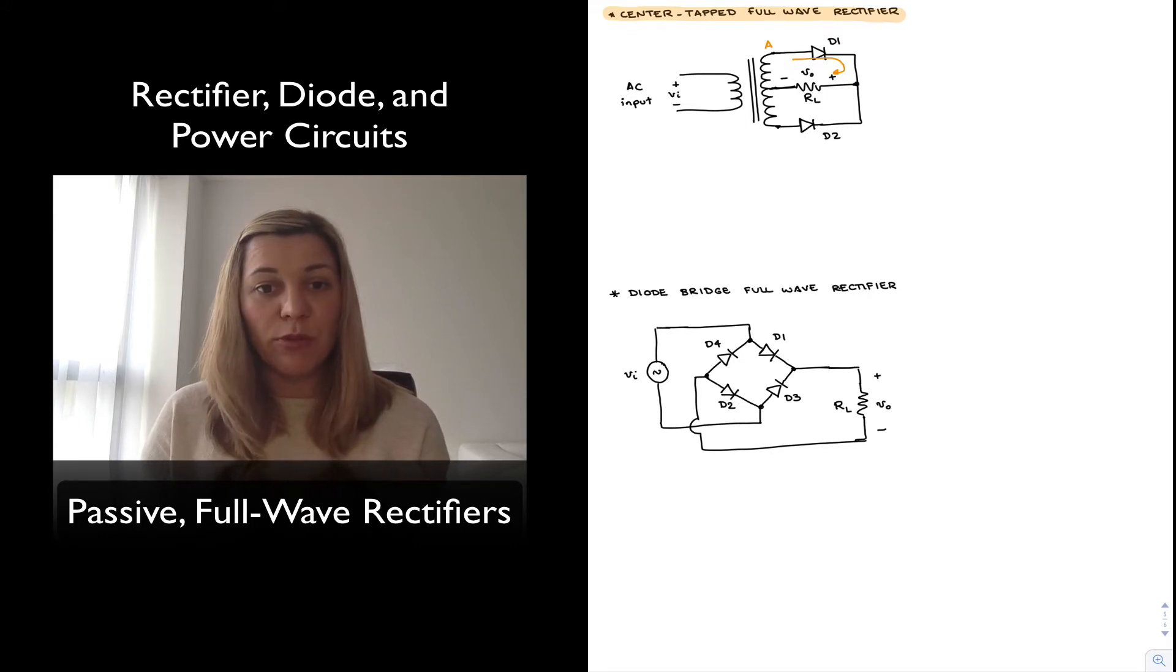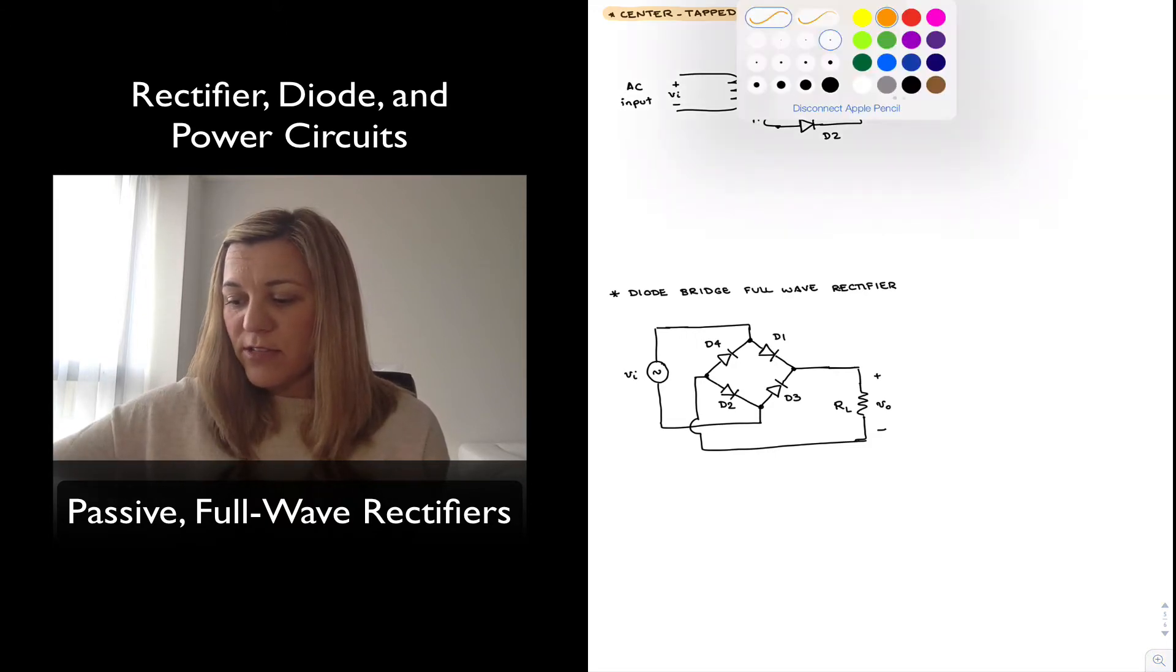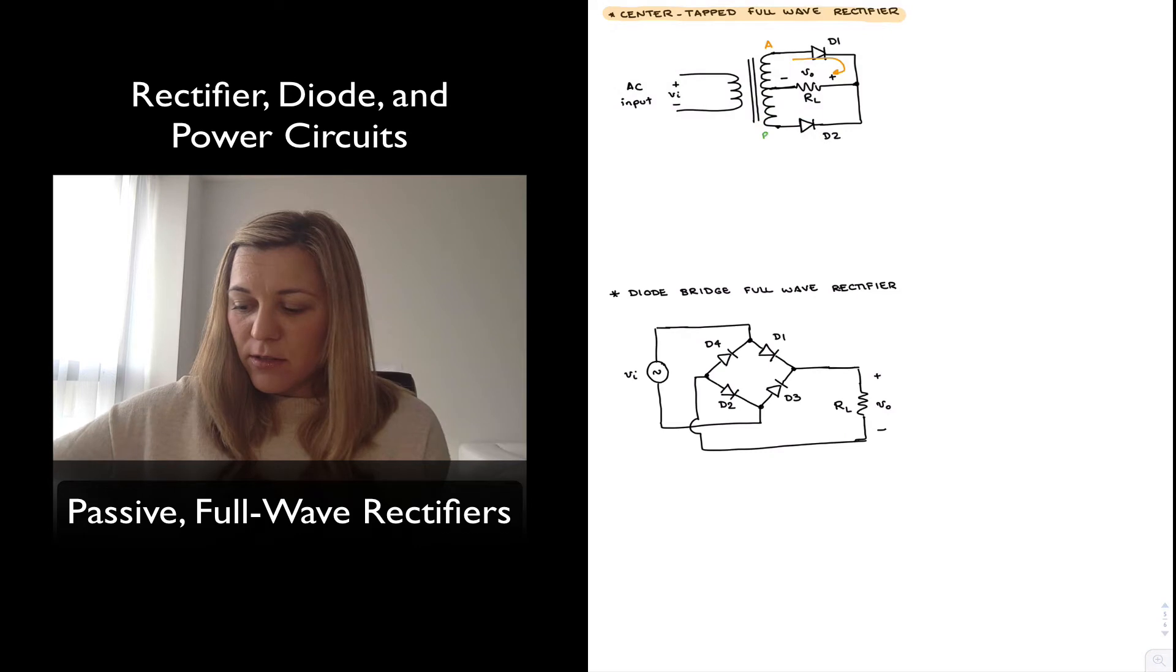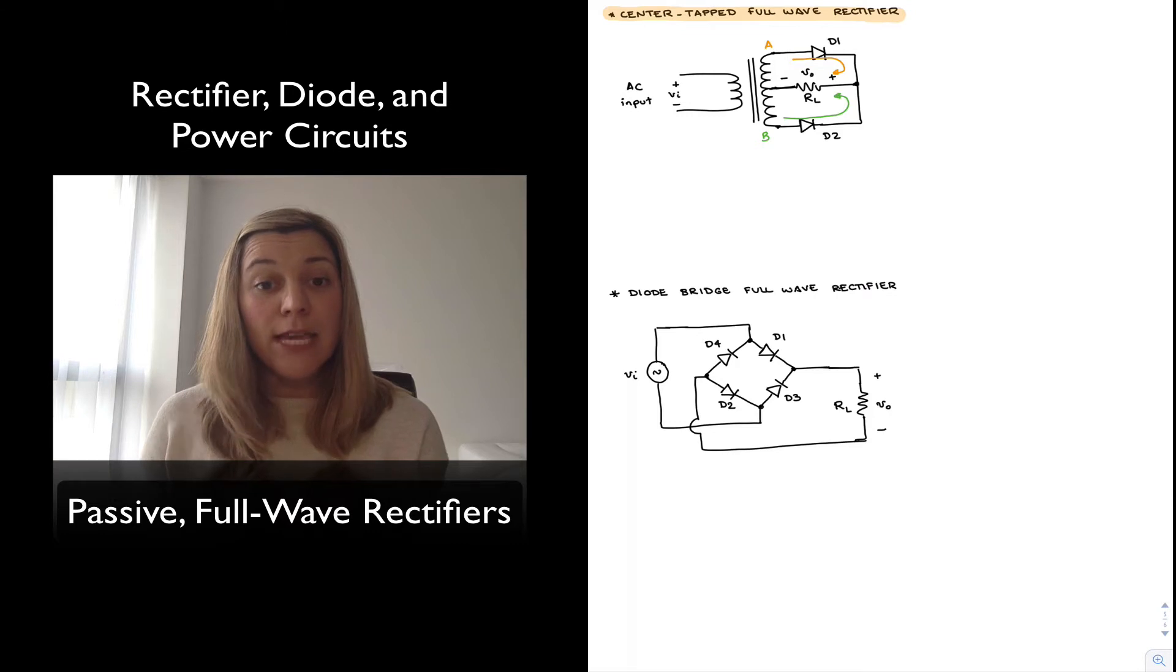The voltage is positive in the polarity indicated because of the direction of current flow. During the negative half cycle, D2 is the diode that turns on because its anode becomes of higher polarity than its cathode. Current flows in that direction and flows through the resistor in the same direction as during the positive half cycle. Therefore, the voltage that appears across RL is of the same polarity as before, a positive polarity in this case.